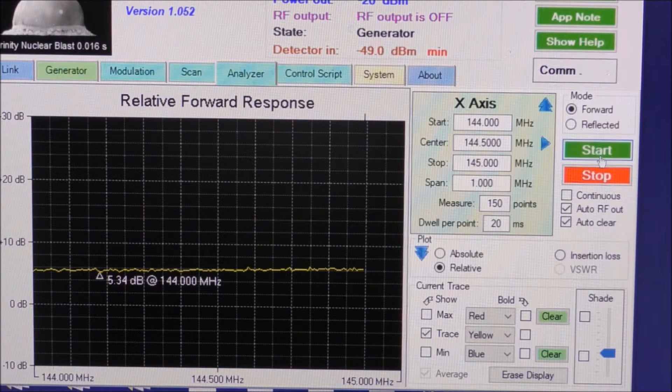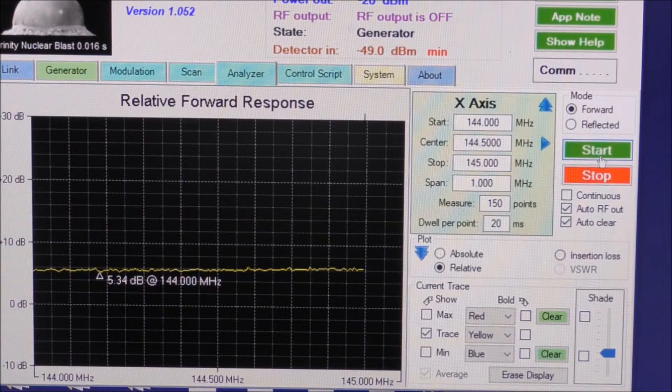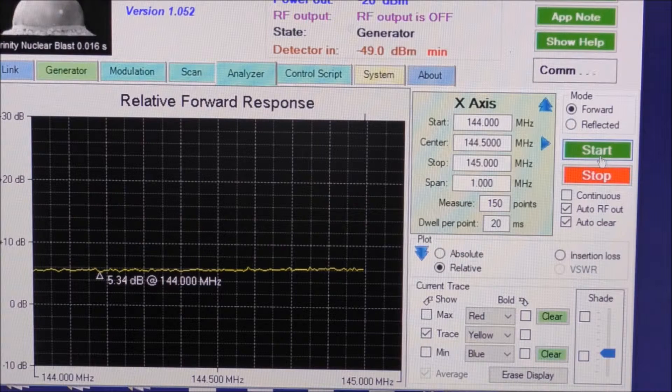Okay, we can see the gain of this amplifier at 144 MHz is 5.34 which is a little on the low side which is interesting.